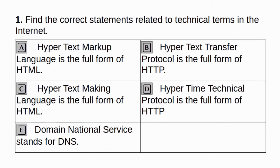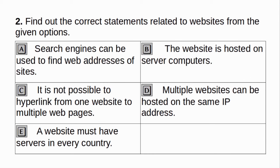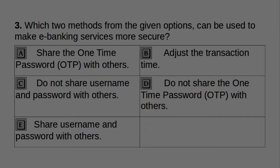Part 2. Find the correct statements related to technical terms in the internet. A. Hypertext markup language is the full form of HTML. B. Hypertext transfer protocol is the full form of HTTP. C. Hypertext making language is the full form of HTML. D. Hypertext technical protocol is the full form of HTTP. E. Domain national service stands for DNS. Answer: A and B. Find out the correct statement related to website from the given options. Answer: A and B - Search engines can be used to find web addresses of sites, and the website is hosted on server computers.